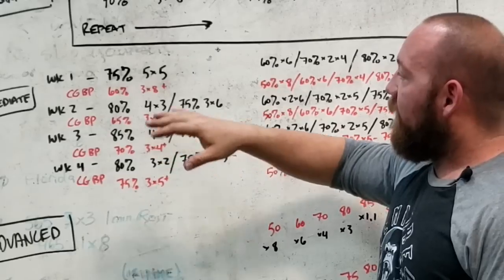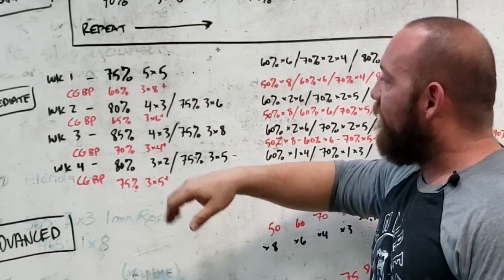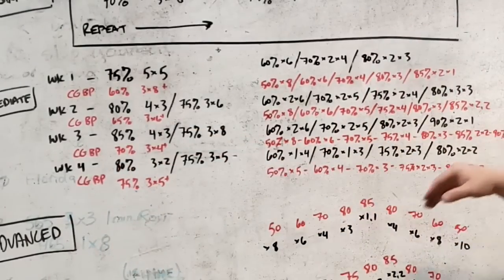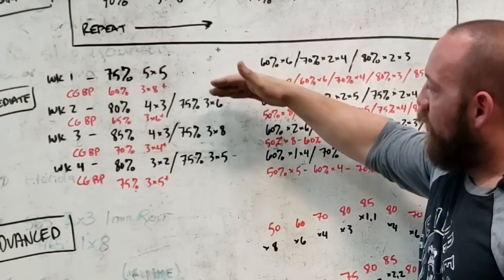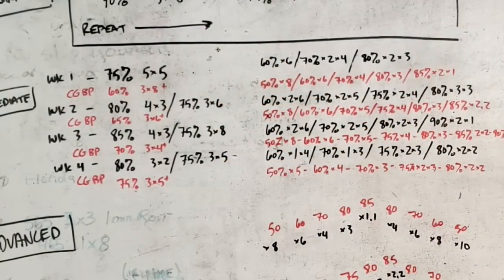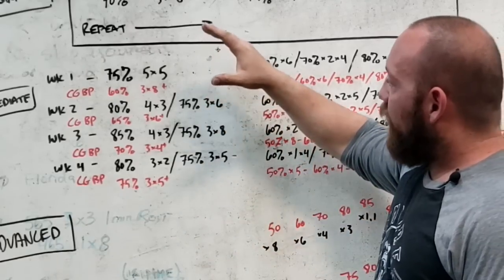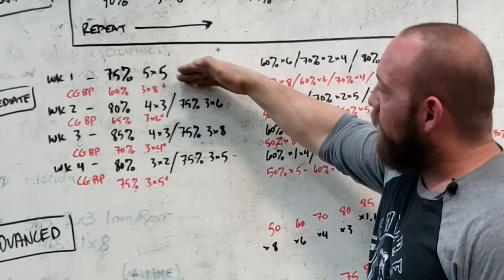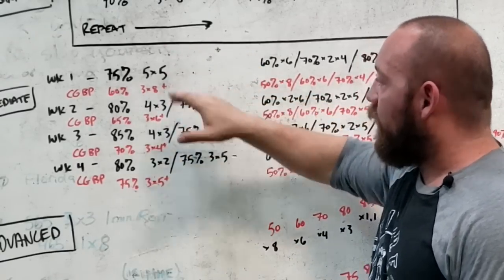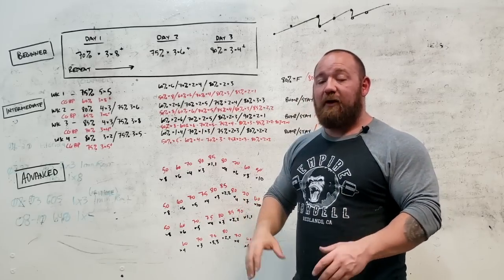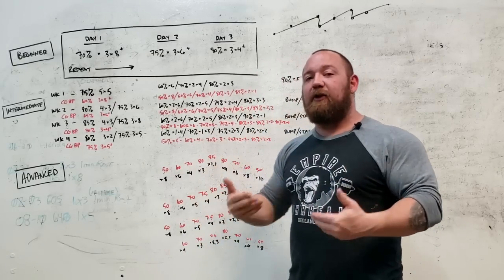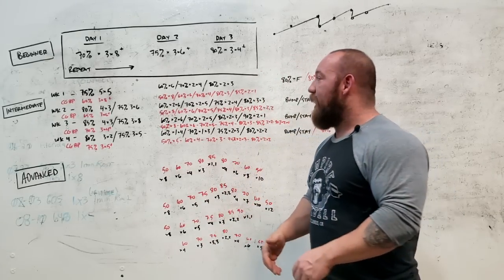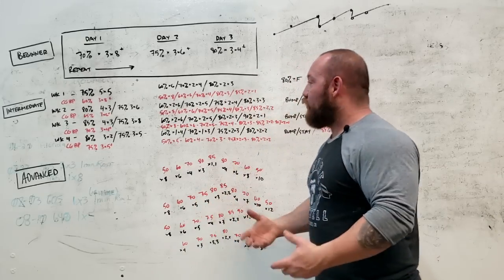So everything in black is the moderate volume intermediate split. Everything in red is the high volume. And he recommends doing the intermediate split first if you don't have experience with really high volume programs like this, and this is a very high volume program. So day one, you're benching on the moderate volume. You're just doing a 75% five by five. Then you're going to 80% with 75% back offs, then 85%. And then week four, you'll notice all the way across is reduced workload. So it goes baseline, a little more, a little more work. And then week four is kind of recovery before you reset and cycle through it again.